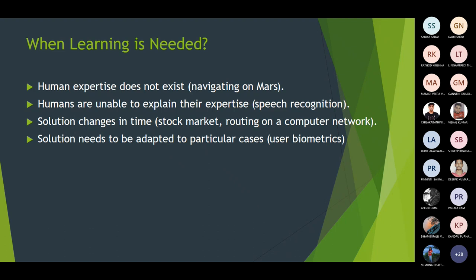Another application is biometrics, where human expertise works slowly and does not work properly, so we have to depend on machines running machine learning algorithms. Here the solutions need to be adapted to particular cases because subjects frequently change their positions and appearance due to different environments.